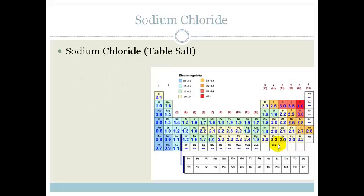Let's look at an example. Let's look at sodium chloride, which is table salt. We've got this beautiful periodic table which has all the electronegativities. Sodium chloride is made up of sodium, and if we look over here we can see that the electronegativity of sodium is 0.9, which means it doesn't hold onto its electrons very well at all.